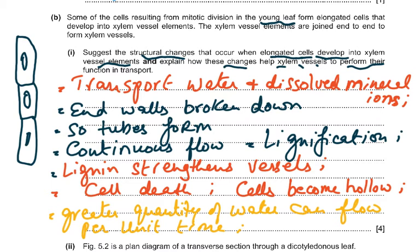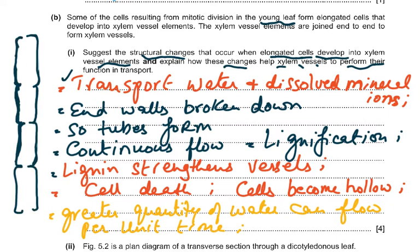First, the function of xylem is to transport water and dissolved mineral ions. Now, looking at the elongated cells, the cross walls break down — so what was originally a whole cell now only has remnants of cross walls visible. This forms a continuous column, and the cell contents die. The cytoplasm is gone, there is no cell vacuole, there is nothing inside.